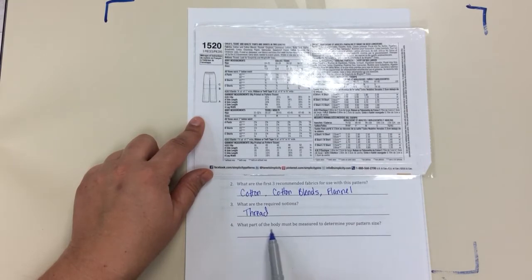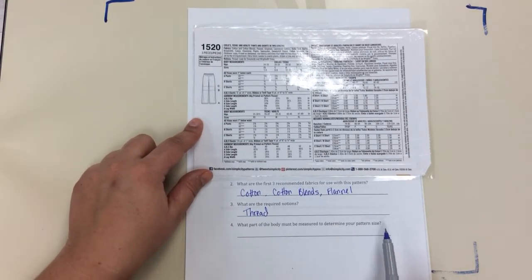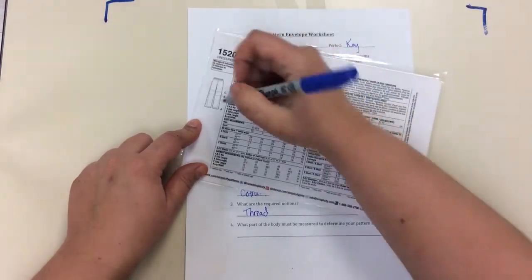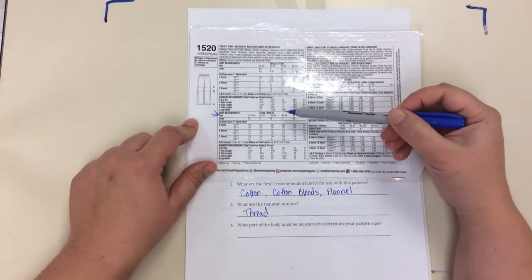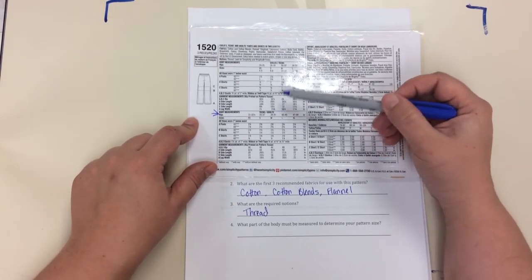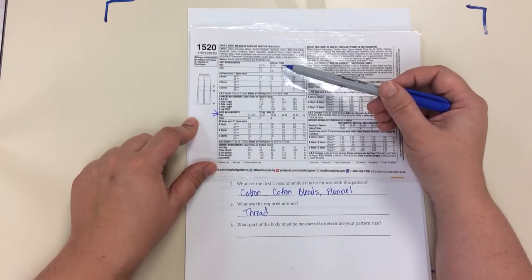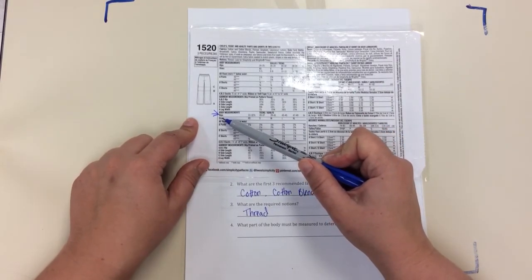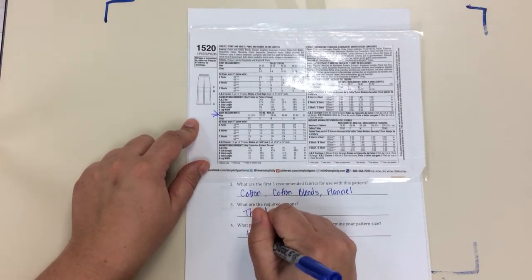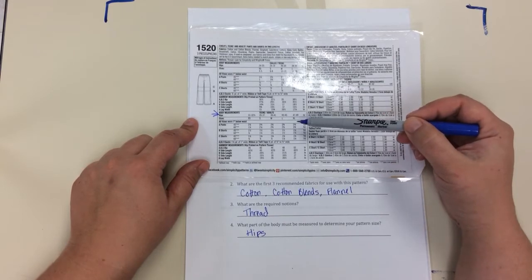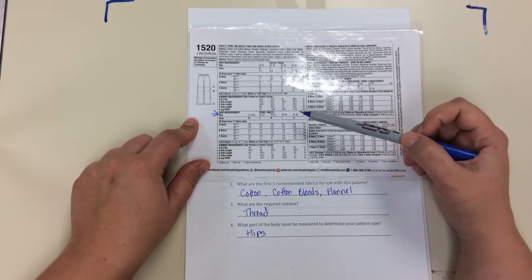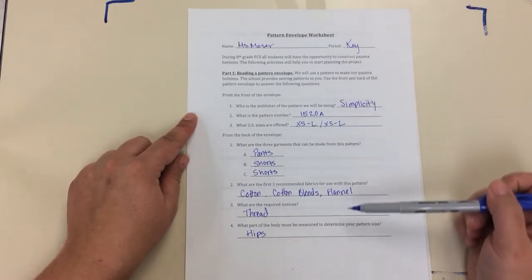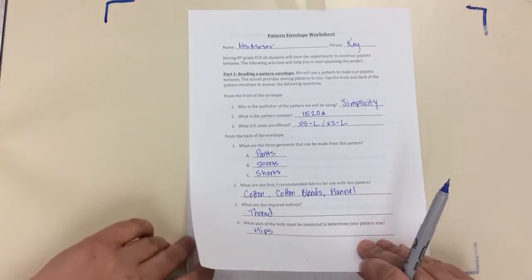And the last question is asking what part of the body must be measured to determine your pattern size. Most people in our classes are going to be making teens and adults sizes, so I'm going to draw a little arrow here just for you guys so that we're looking in the right spot on your envelope. With the teens and adults, body measurements - it just lists hips. So the only part of your body that you need to measure to determine your size for this project is your hips. It gives some measurements here and the corresponding sizes which we're going to look at when we flip to the next page.